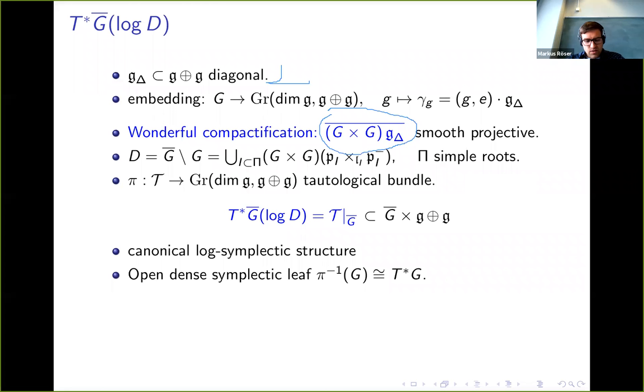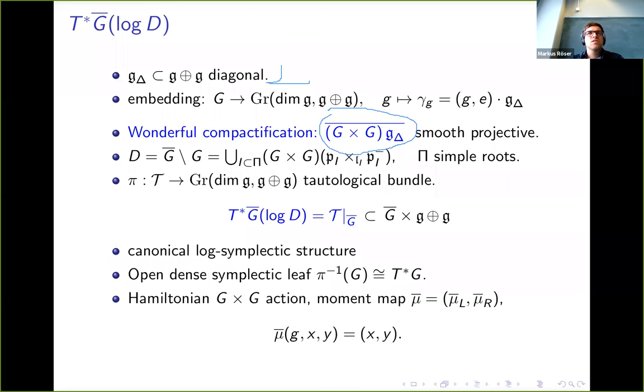The logarithmic cotangent bundle in that case, it turns out, is just the tautological bundle restricted to Ḡ. It comes with a canonical log-symplectic structure whose open dense symplectic leaf is just the cotangent bundle of G. The G×G action on the compactification induces a natural Hamiltonian action on this tautological bundle. The moment map is just projection onto the g + g factor.